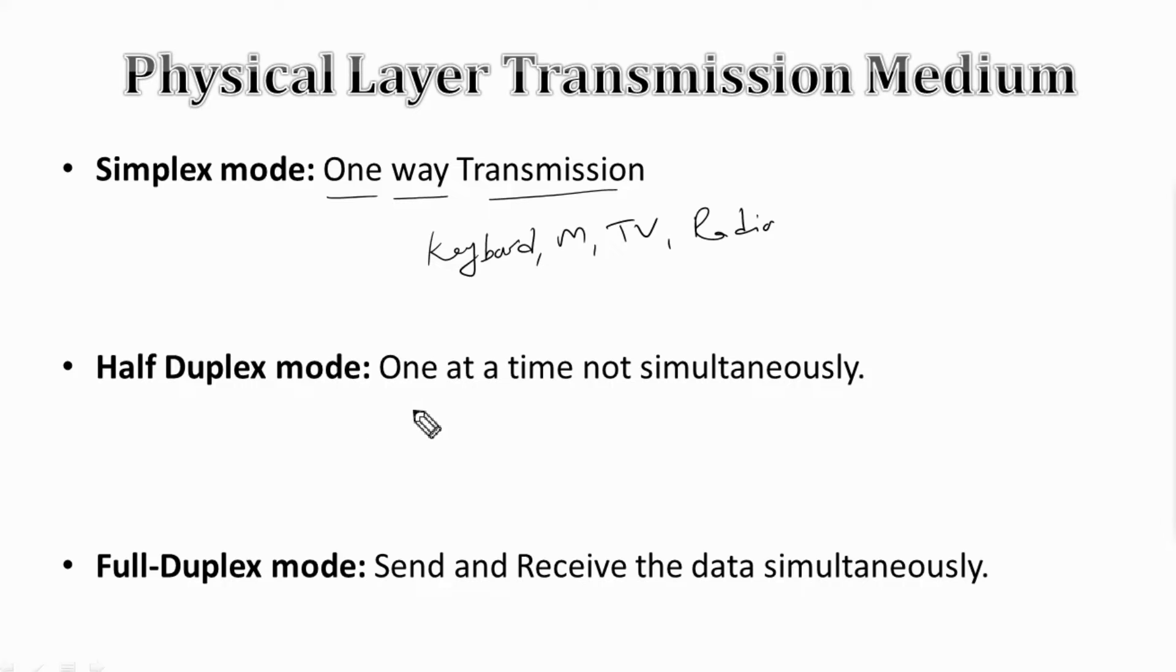In half-duplex mode, both devices can send and receive data but only one at a time, not simultaneously. One can send data while the other receives. Examples include walkie-talkies and railway tracks.